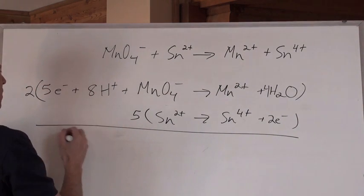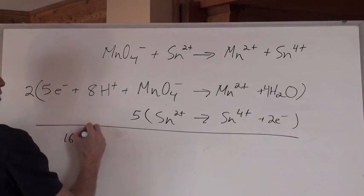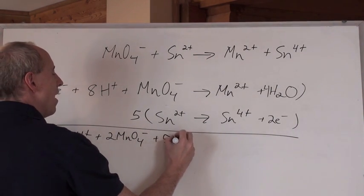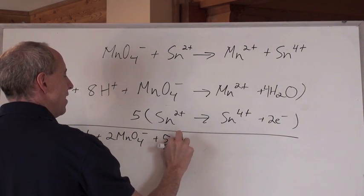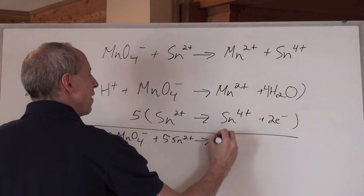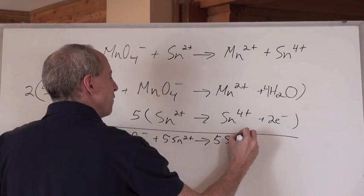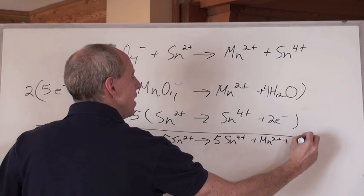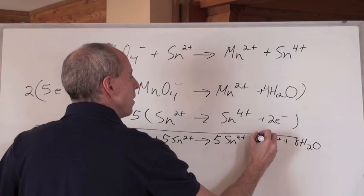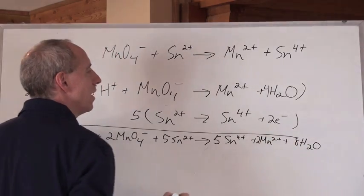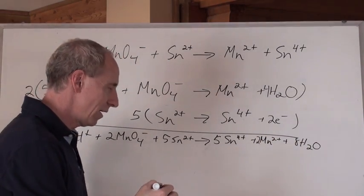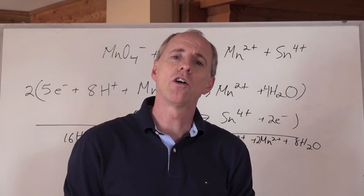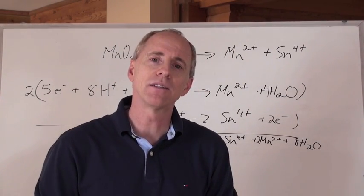But in the end, what you're going to get is you're going to get 16 H positives plus 2 MnO4 negatives plus 5 Sn2 positives and that's going to make 5 Sn4 positives plus 2 Mn2 positive plus 8 H2O. And there is now your balanced reaction here for that. So this is called the half reaction method for balancing.